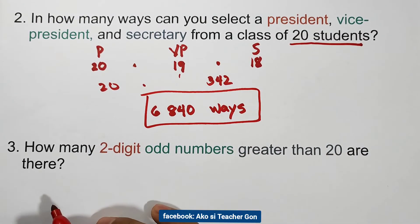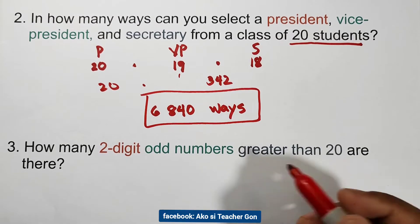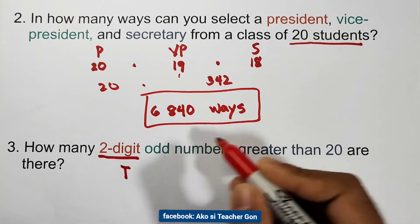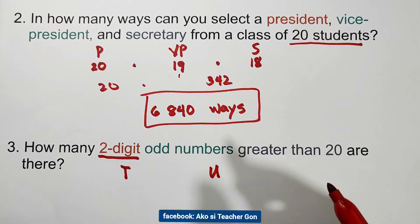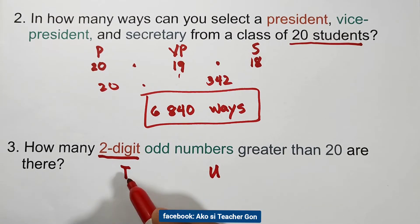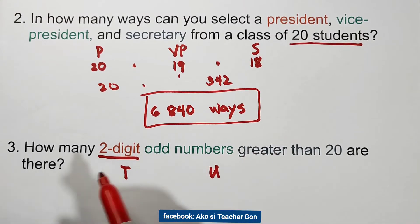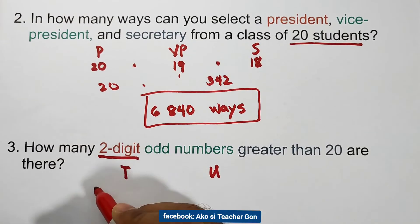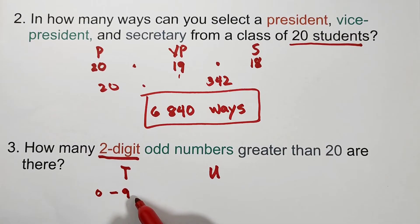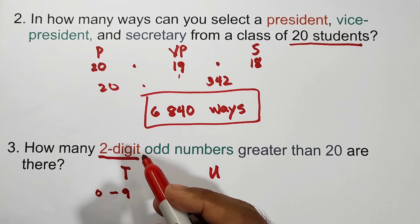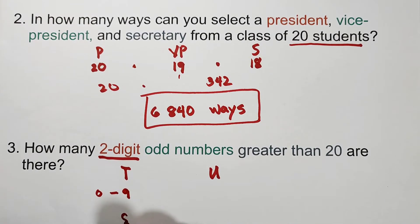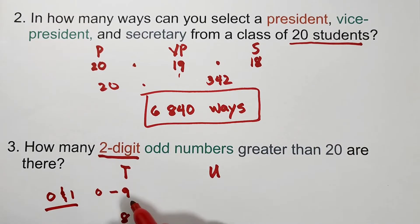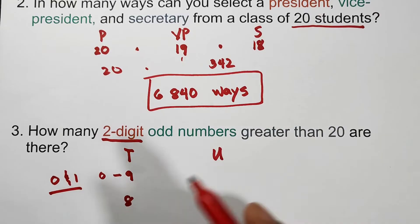For example number three: how many two-digit odd numbers greater than 20 are there? We have a tens digit T and a units digit U. For the tens digit, our digits range from 0 to 9, but since the number must be greater than 20, we exclude 0 and 1. Therefore, we have eight choices for the tens digit.